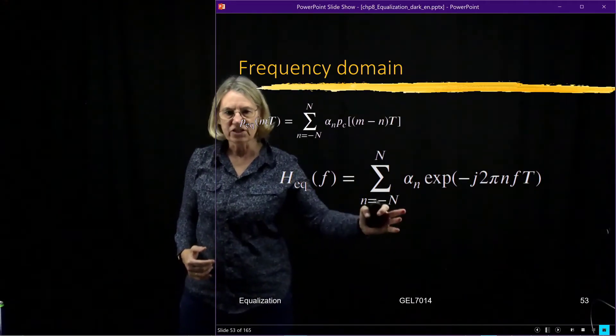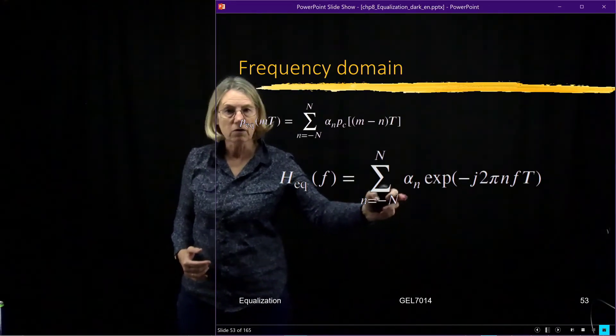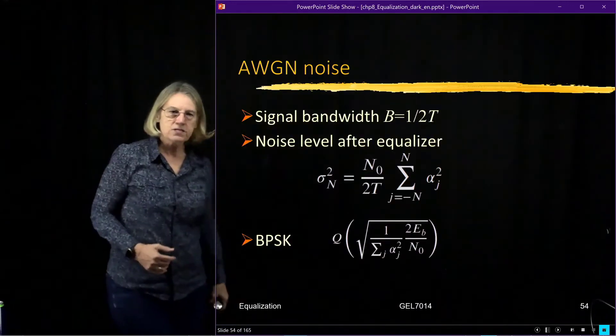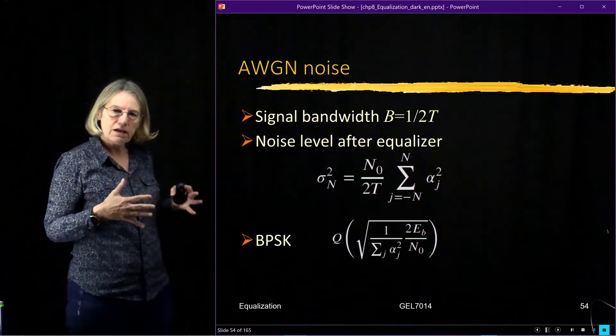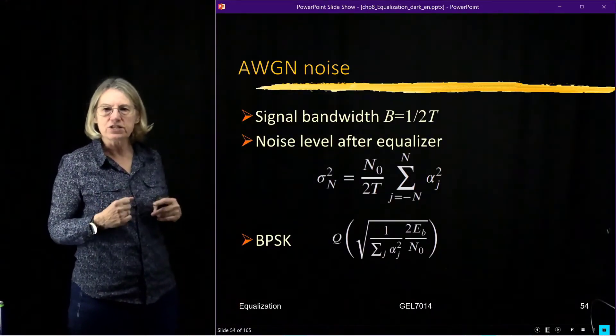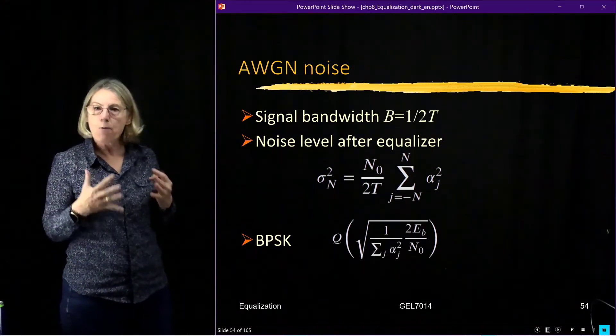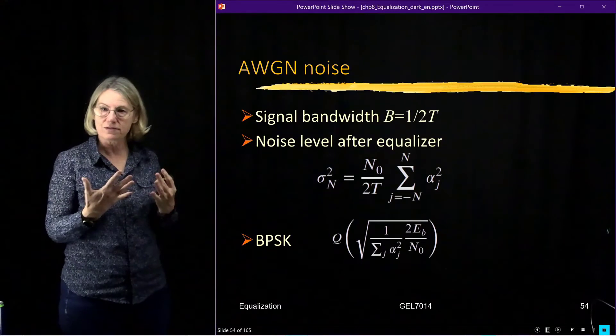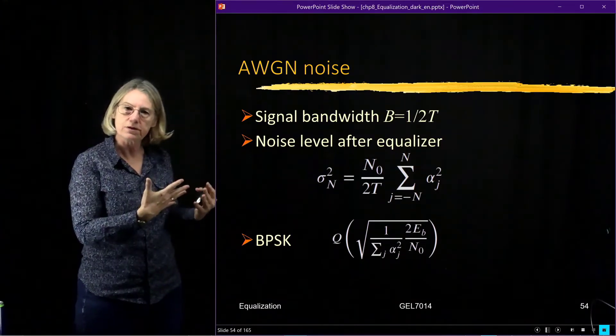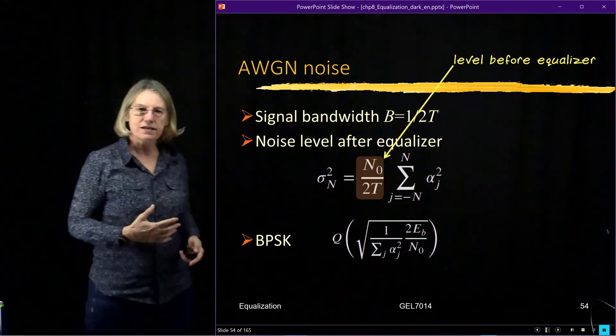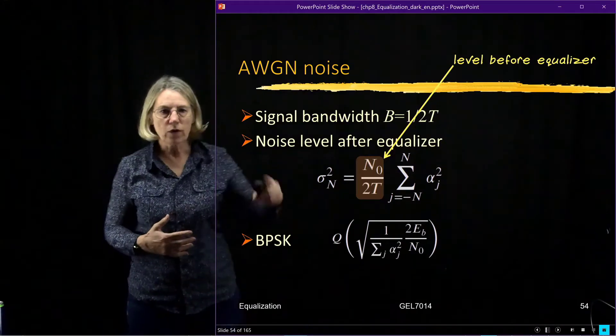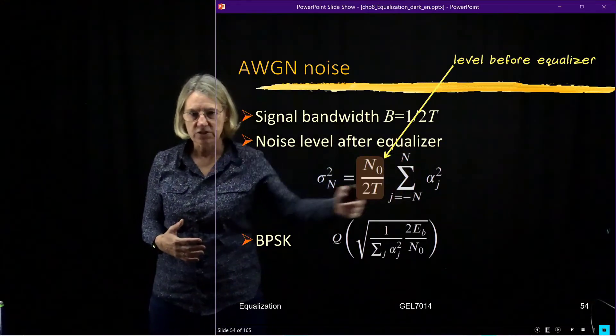Here is the frequency domain representation of my equalizer based on what were the coefficients I used. So if I look at that frequency domain representation of what's going on with the zero forcing equalizer, I can quantify how much is the noise increased by passing through this equalizer. That is this noise level after the equalizer which is given here.